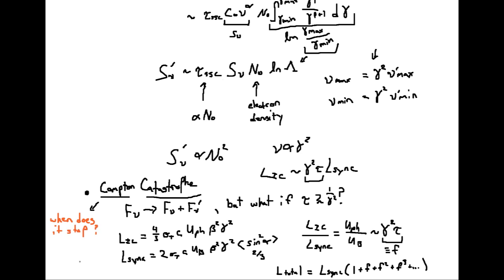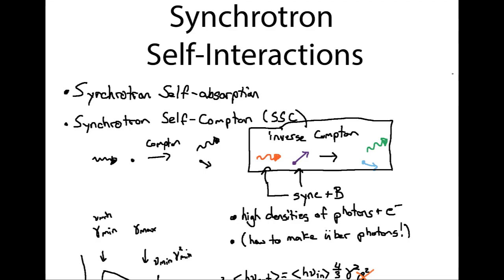The catastrophe stops when the electrons and photons come into equilibrium — when the brightness temperature's energy is of order the kinetic energy of the electrons. Picking γ of order 100 or 1,000, you get brightness temperatures of order 10¹² Kelvin, about as bright as anything we observe in the universe. This comes from the most compact objects undergoing the Compton catastrophe, with synchrotron-generating electrons producing photons that scatter again and again off the relativistic electrons. Thanks for joining this video on synchrotron self-interactions, where we covered synchrotron self-absorption and synchrotron self-Compton scattering.